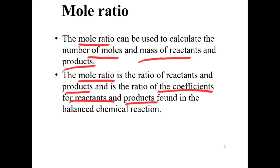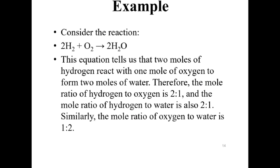In any calculation, you have to make sure that your equation is balanced. Consider this reaction: the equation tells us that two moles of hydrogen react with one mole of oxygen to produce two moles of water. Therefore, the mole ratio of hydrogen to oxygen is two to one.